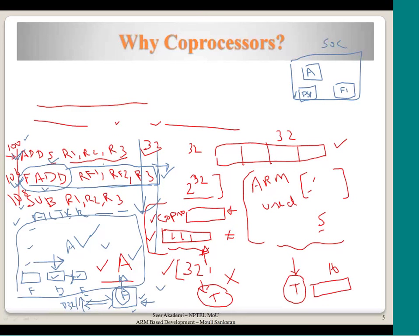ARM processor knows that it is not its instruction, so it will look for any takers in the system. There could be a floating point coprocessor and another DSP processor. You may have a floating point operation instruction and then maybe a filter operation - the filter instruction may be picked up by the DSP processor. The instruction fetching is done by the ARM core, but what is fetched is also seen by the other cores, which keep their own pipelines and fill instructions as ARM accesses them from memory.